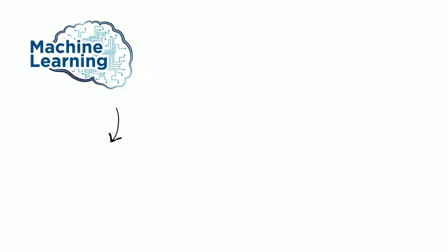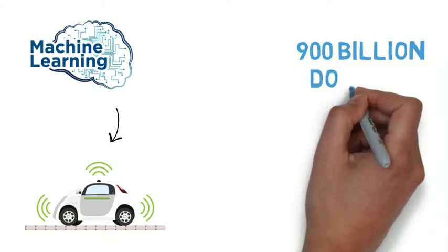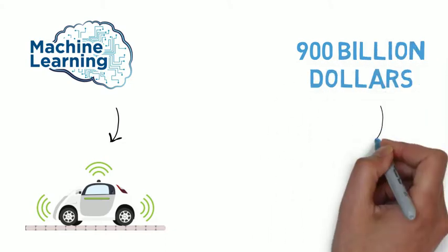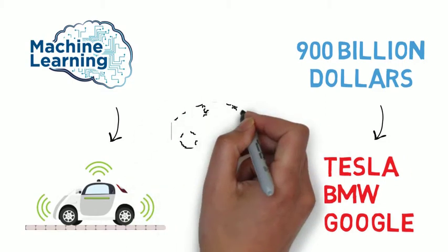With a leap in machine learning in many such areas, autonomous cars are getting better and better. A market value of almost $900 billion is waiting for companies like Tesla, BMW and Google as they are already working on it.